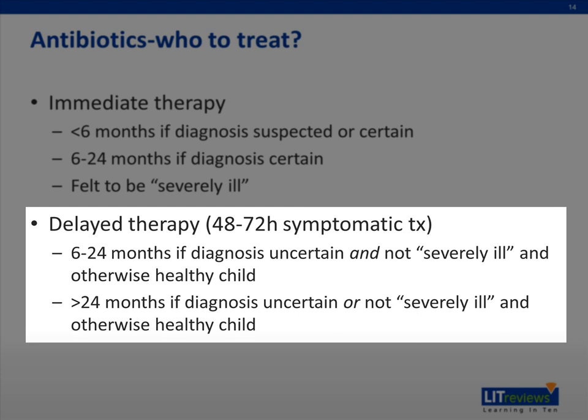However, this delayed strategy should only be attempted in two patient populations. The first is otherwise healthy patients who are 24 months of age or older and have an uncertain clinical diagnosis, or have only mild to moderate illness with a certain clinical diagnosis. The second group is patients who are 6 to 24 months of age who have only mild or moderate illness and an uncertain diagnosis.